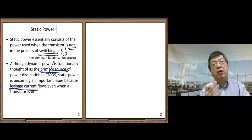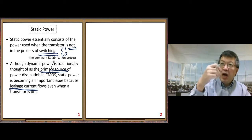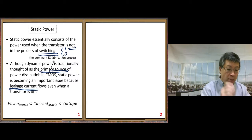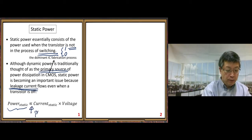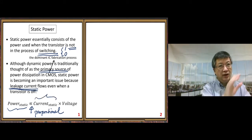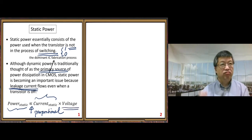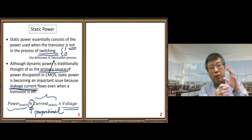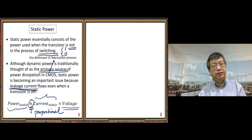Leakage current flows even when a transistor is off. There is still a pretty small amount of current going through the transistors, consuming power and energy. Sometimes we need to factor in that static power component. The formula is given as: static power is proportional to the static current — which can be measured using special tools — multiplied by the voltage.